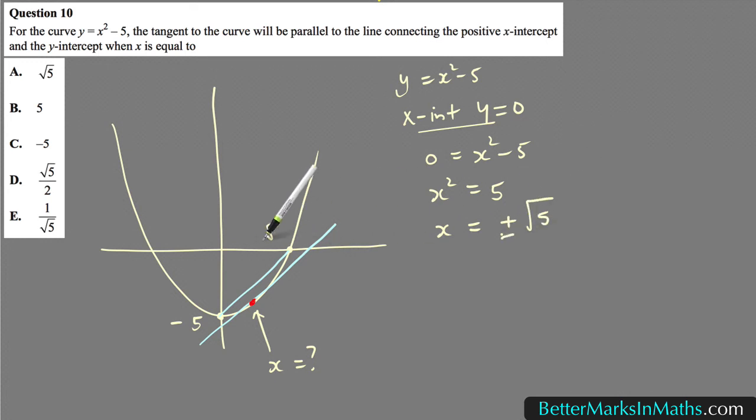So this would be the square root of 5, the positive square root of 5, this x-intercept. If you know the gradient of that tangent, which would be the same as this gradient,